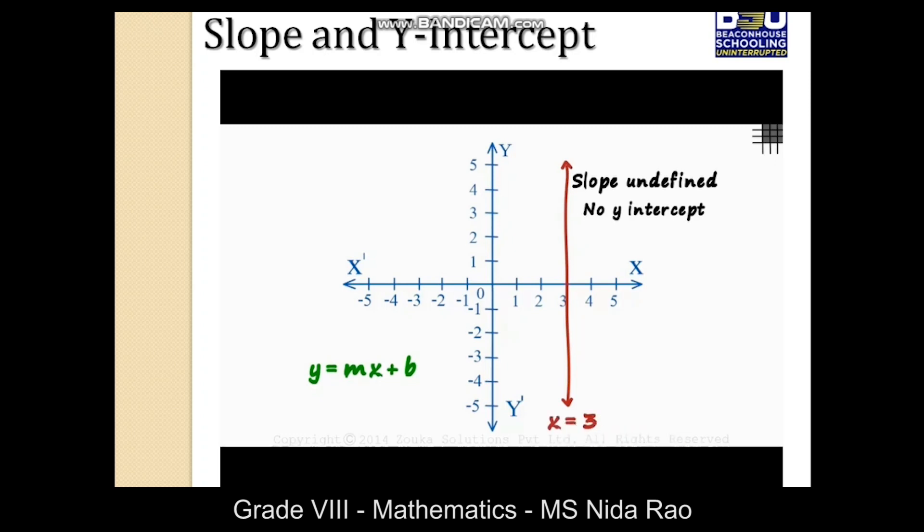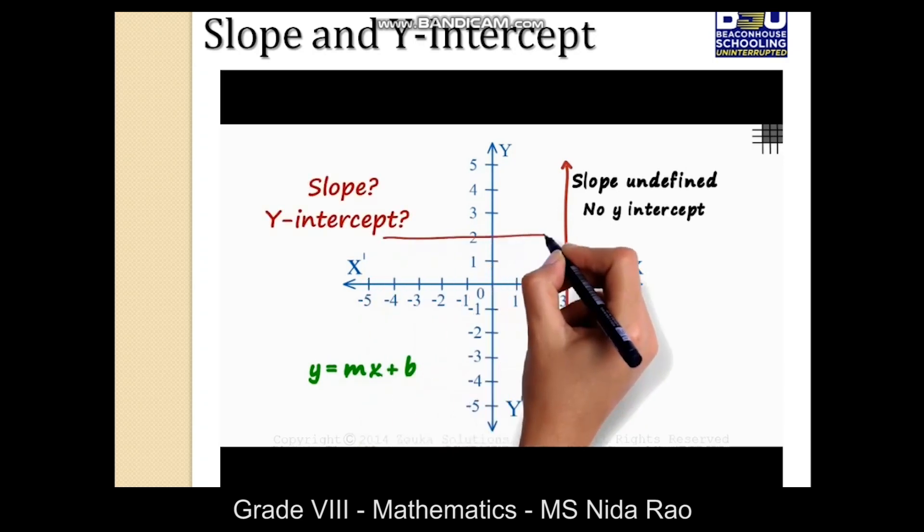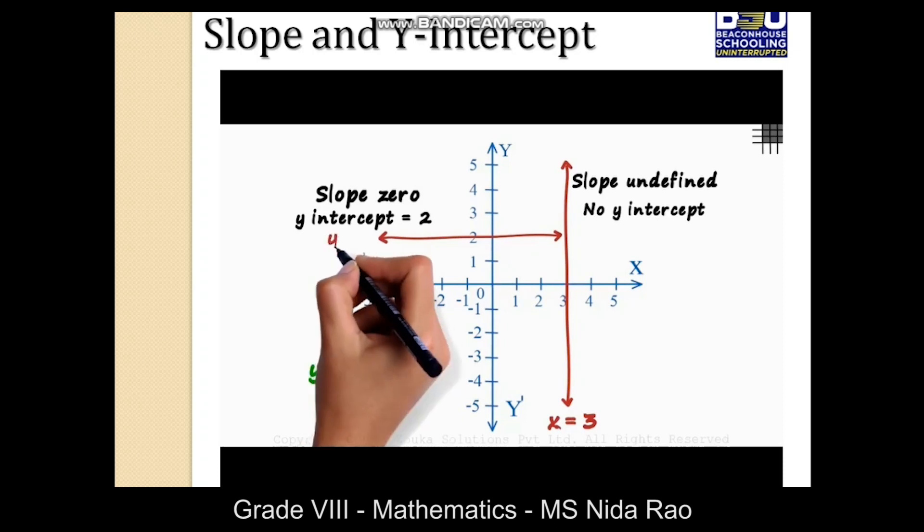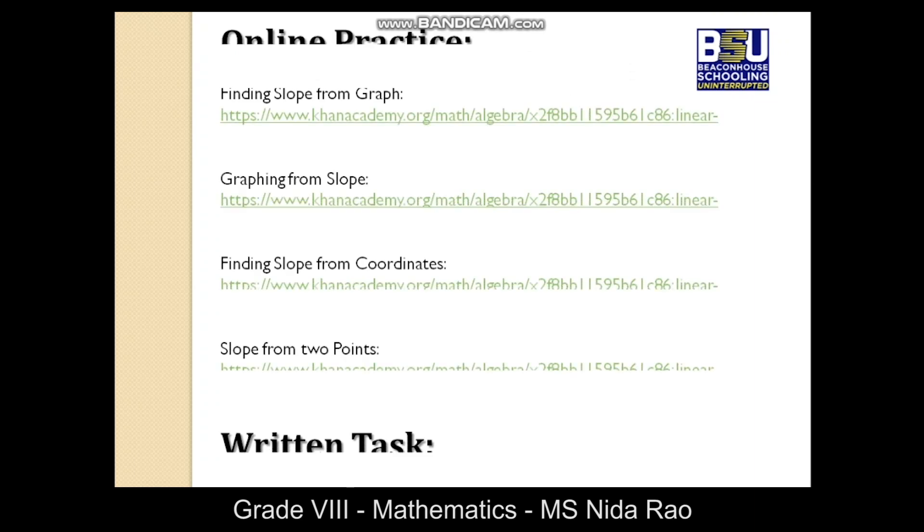Here's an interesting question for you: What do you think will be the slope and the y-intercept of this line which is parallel to the x-axis? It has no tilt. The rise is 0. The slope of this line will be 0. As it meets the y-axis at 2, the y-intercept will be 2. And the equation of this line is y equals 2.